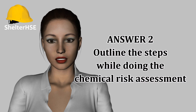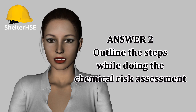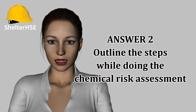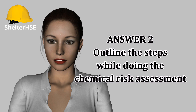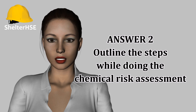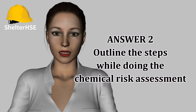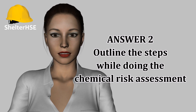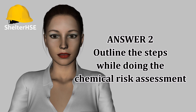Outline the steps to take while doing a health risk assessment from chemicals. First, consider the hazardous nature of the substance: is it toxic, corrosive, carcinogenic, or any other health hazard? Then assess the potential ill health effects — will the substance cause minor ill health or very serious disease, and will these result from short-term or long-term exposure?